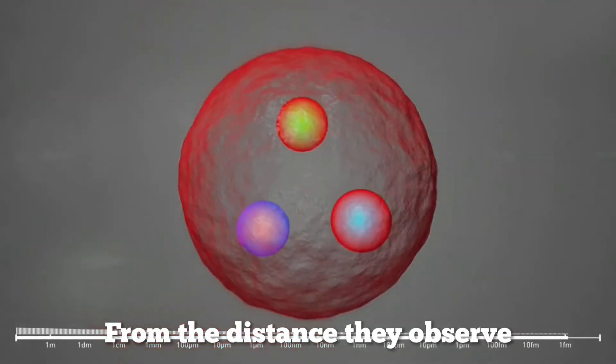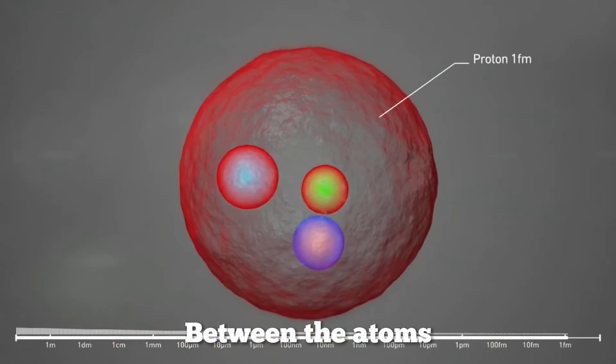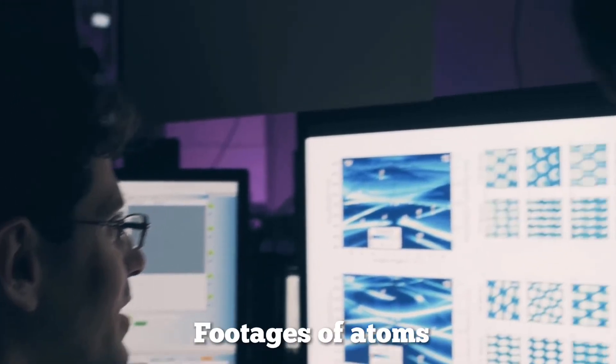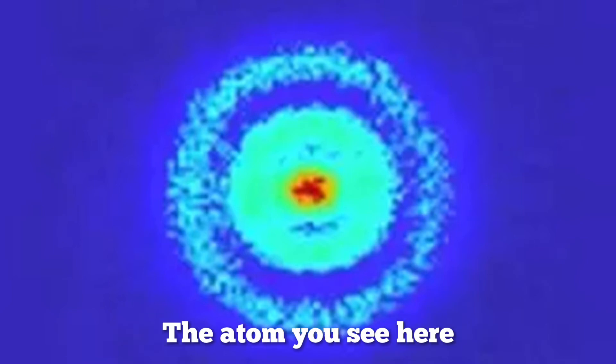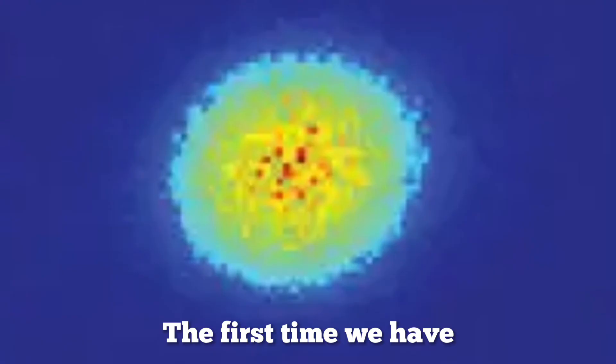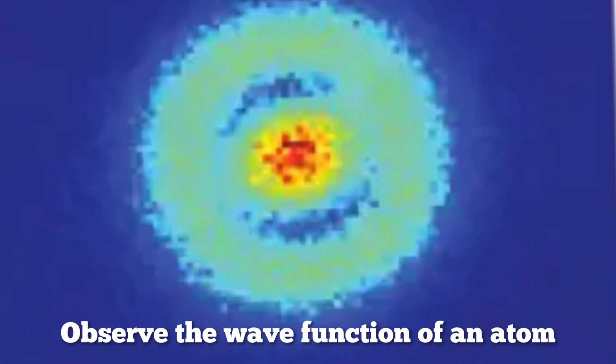There are also a few other footages of atoms, such as the one you see here. The atom you see here is a hydrogen atom. This photograph shows the atom's electron orbital, the first time we have ever been able to observe the wave function of an atom.